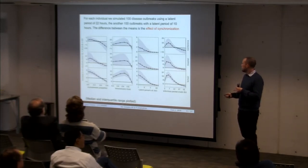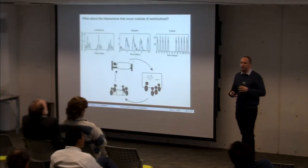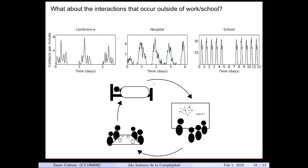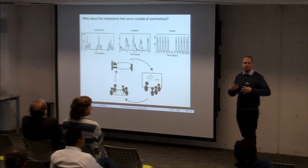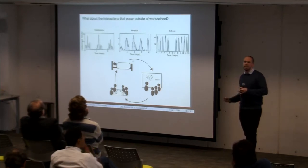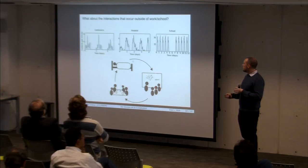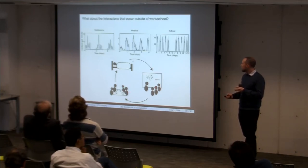We did this for all datasets and got similar results for all three — the previous result was showing the school data. There's one other issue to address: there's a lot of missing data in these datasets between recorded time points, and there's not really anything we can do about that. We can't go back and ask these people who they were interacting with during those times. Instead of trying to use only empirical data, we can do some sort of simulation.